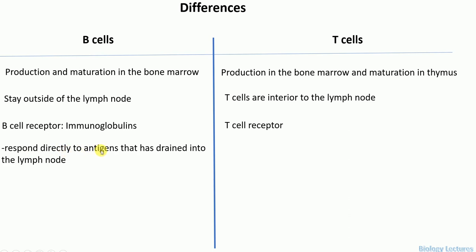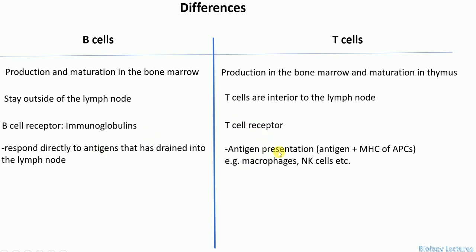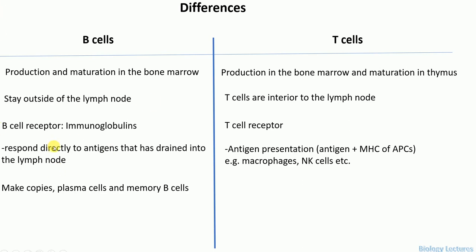B cells respond directly to the antigens that have drained into the lymph node. But T cells require antigen presentation — the presentation of antigen together with the major histocompatibility complex (MHC) by antigen presenting cells such as macrophages, natural killer cells, and B cells. The T cell receptor recognizes antigens that have already formed a complex with MHC molecules and are presented to the T cell, whereas B cell receptors — the immunoglobulins — directly bind to the antigens that have drained into the lymph node.